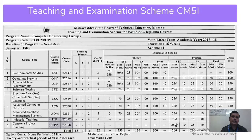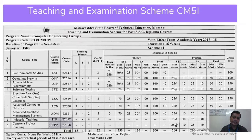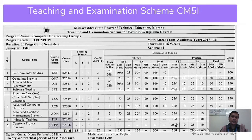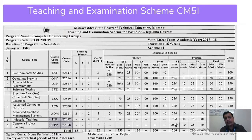Let us discuss the Teaching and Examination Scheme for the fifth semester. In the fifth semester, we have five theory subjects: Environmental Study, Operating System, Advanced Java Programming, Software Testing, and one elective — in our college, we go with Client-Side Scripting Language. A total of 500 marks are allocated for the Theory part and 400 marks for the Practical part, making the fifth semester a total of 900 marks.